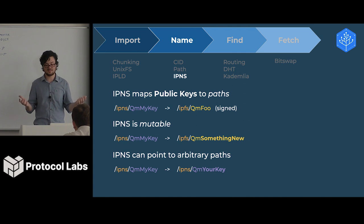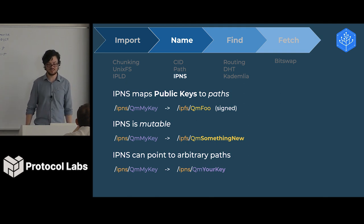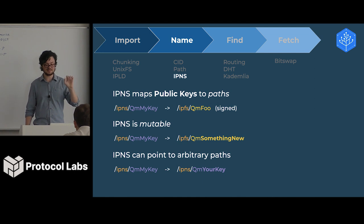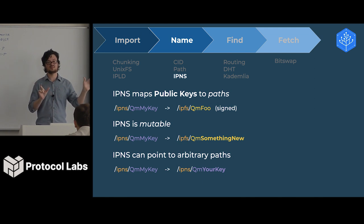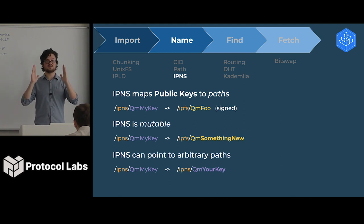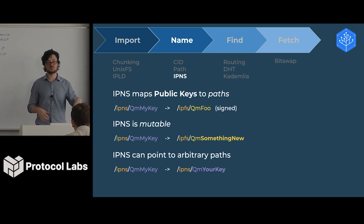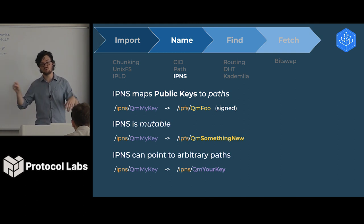The final part of naming is IPNS. This is actually our naming system — IPNS stands for the Interplanetary Name System. IPNS allows you to map a public key to a path. The way this works is you take the path you're trying to map to, take your public and private key, use your private key to sign the path you're pointing to, and publish it to the world. If you want to update it, you sign a new record and release it. You put an additional sequence number — this is version 2, version 3, version 4, et cetera.